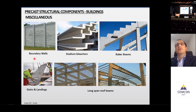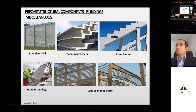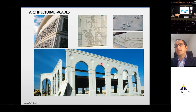Other structural components include boundary walls, stadium bleachers, raker beams, stairs and landings, and long span roof beams. On the screen you can see an I-beam of 55 meters — close to 165 feet — with openings for the truss; it's a concrete pre-tensioned beam. We can achieve very long spans for industrial structures using precast technology. Architectural facades with a lot of patterns can also be made structural by adding a load-bearing layer at the back, while leaving grooves, patterns, colors, or exposures on the front.